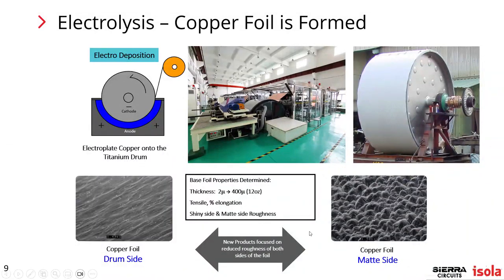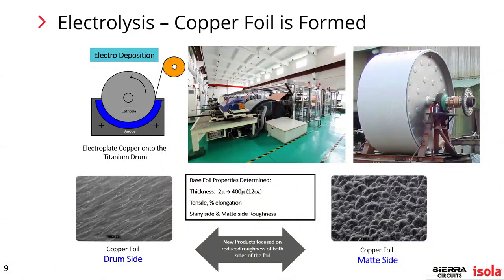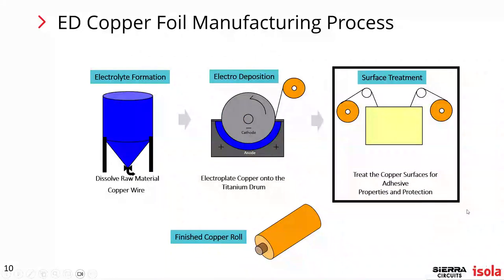The base foil properties can range anywhere from 2 microns up to 400 microns. They control percent elongation in this process and use either the shiny side or the matte side for RTF or HTE shiny side foil. The grain structure of the copper creates lumps visible on the surface. Battery foils, where this grain structure has been significantly reduced, are now the most common products used for high-speed digital end materials at Isola and other laminators.